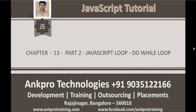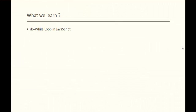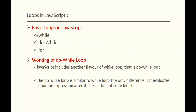Hello, welcome to JavaScript tutorial chapter 13 part 2 - JavaScript loops: the do-while loop, brought to you by Angpro Technologies. My name is Arish. In this session we are going to learn about the do-while loop in JavaScript. The basic loops are: while, do-while, and for loop. In the last session we learned about the while loop, and in this session we are going to understand what the do-while loop is and how it works.